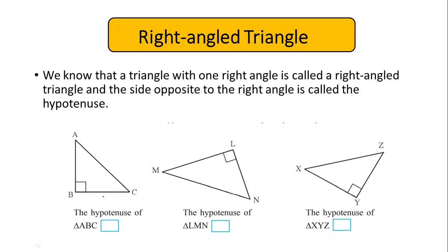If I talk about triangle ABC, angle B is 90 degrees. So the side which is opposite to angle B, that is side AC, is going to be the hypotenuse of the triangle.